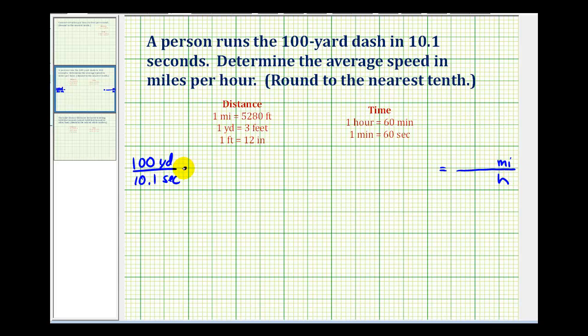So to do this, we'll multiply by several unit fractions—fractions that are equal to one—to make the conversion from yards to miles and from seconds to hours.